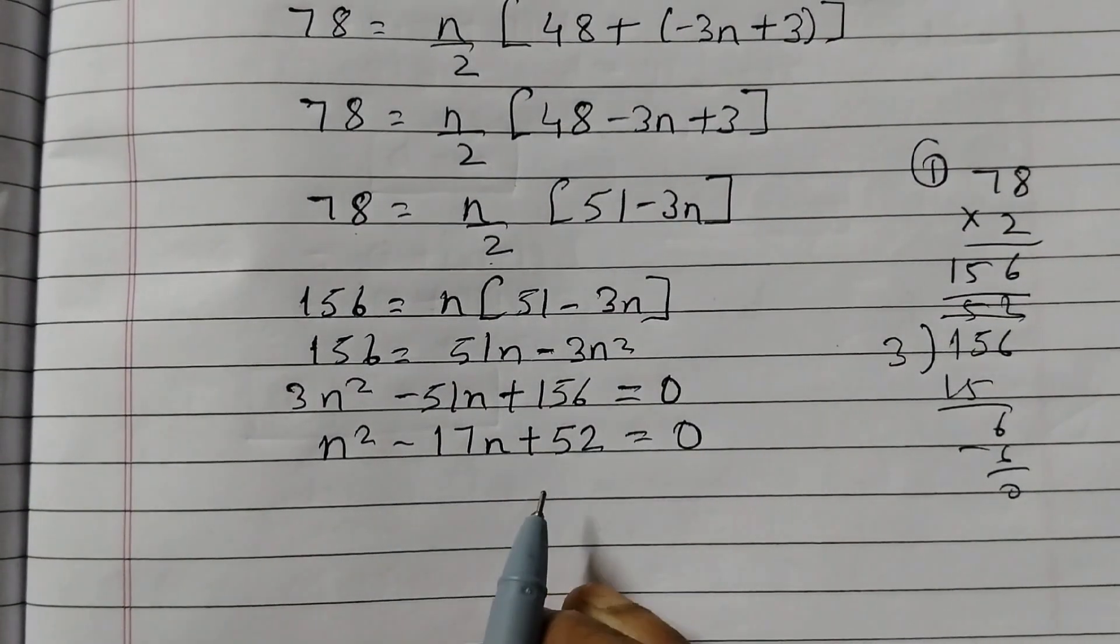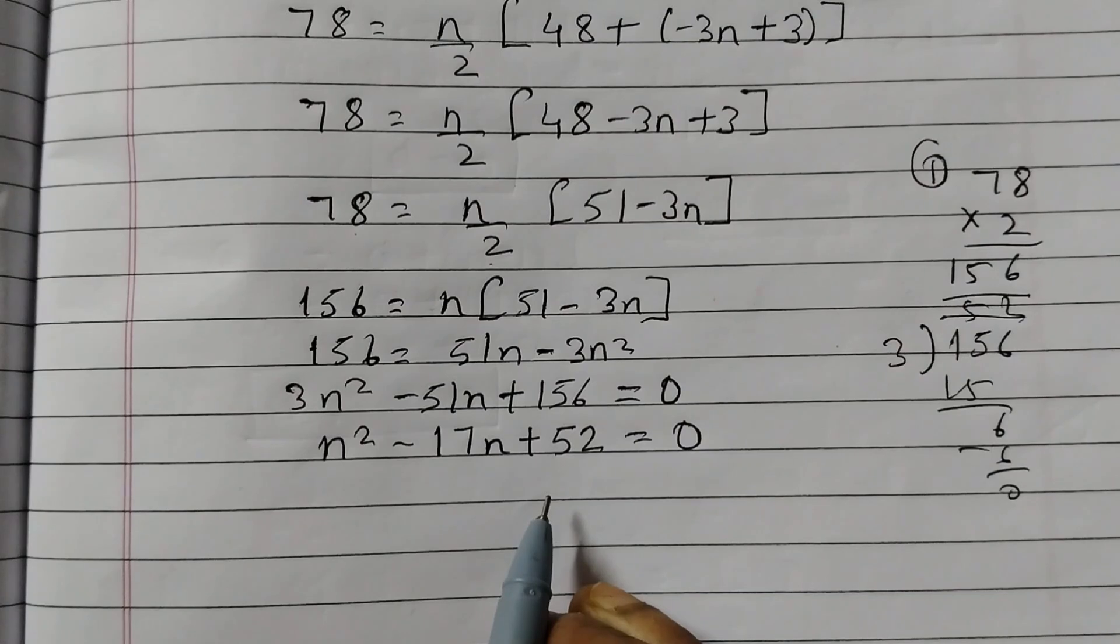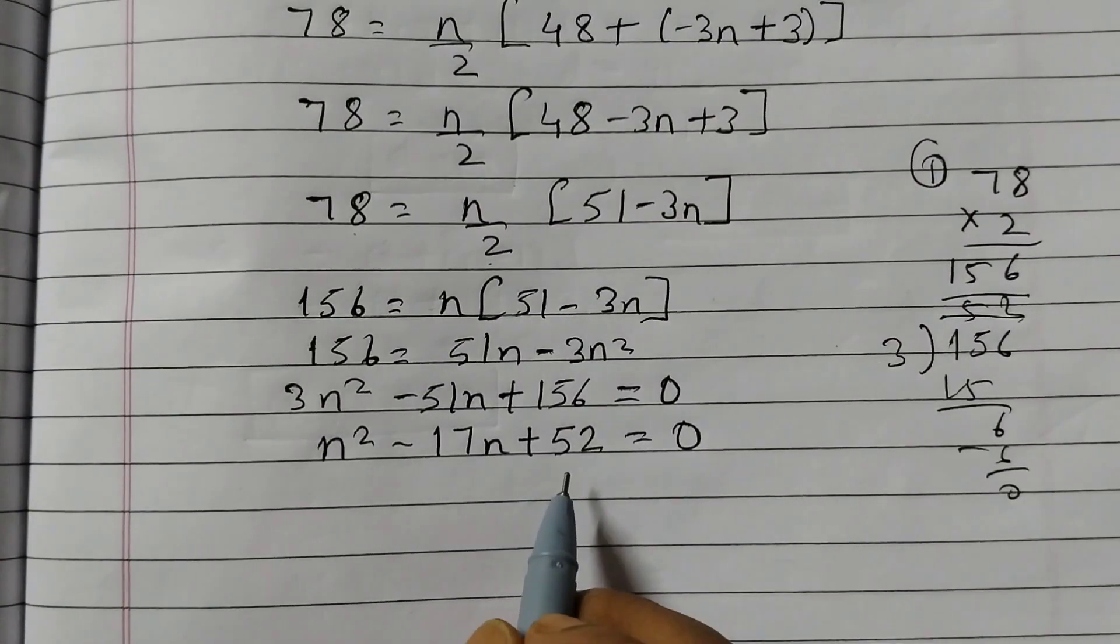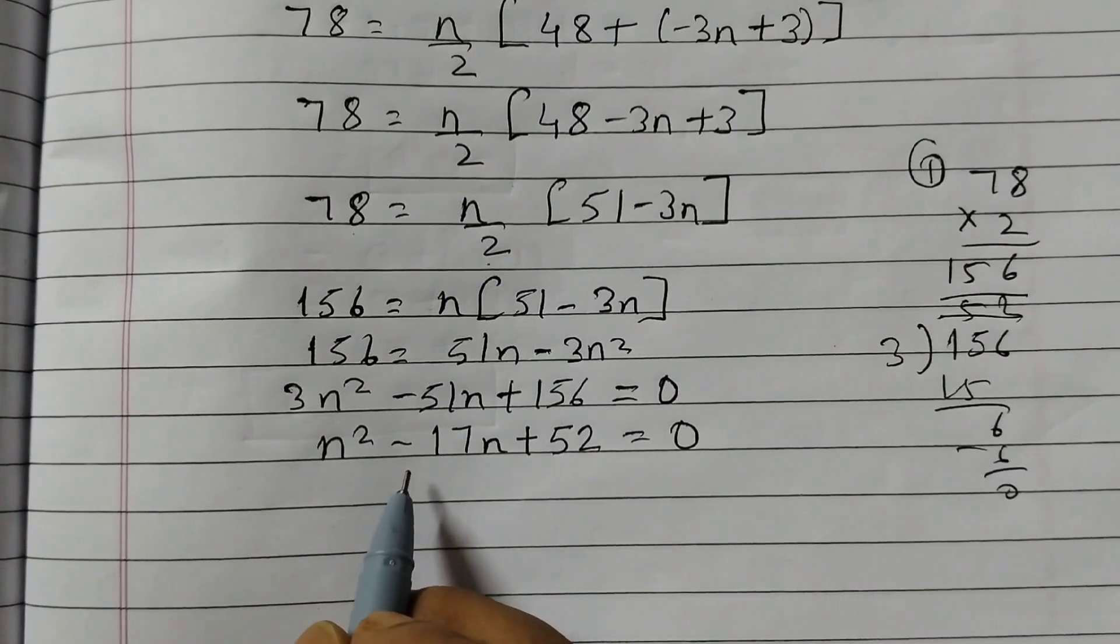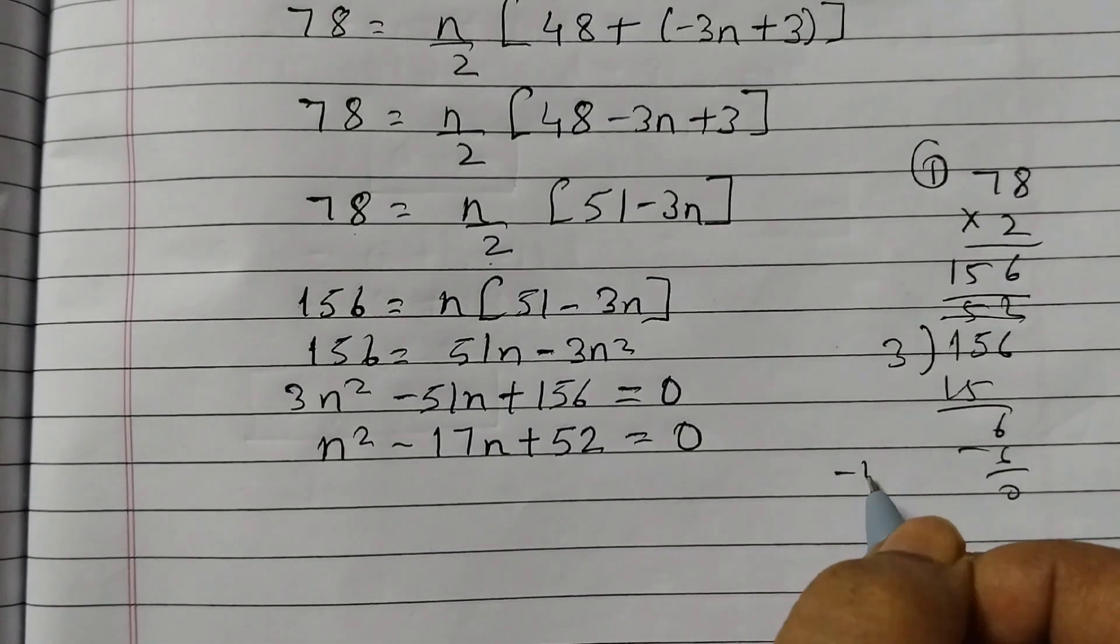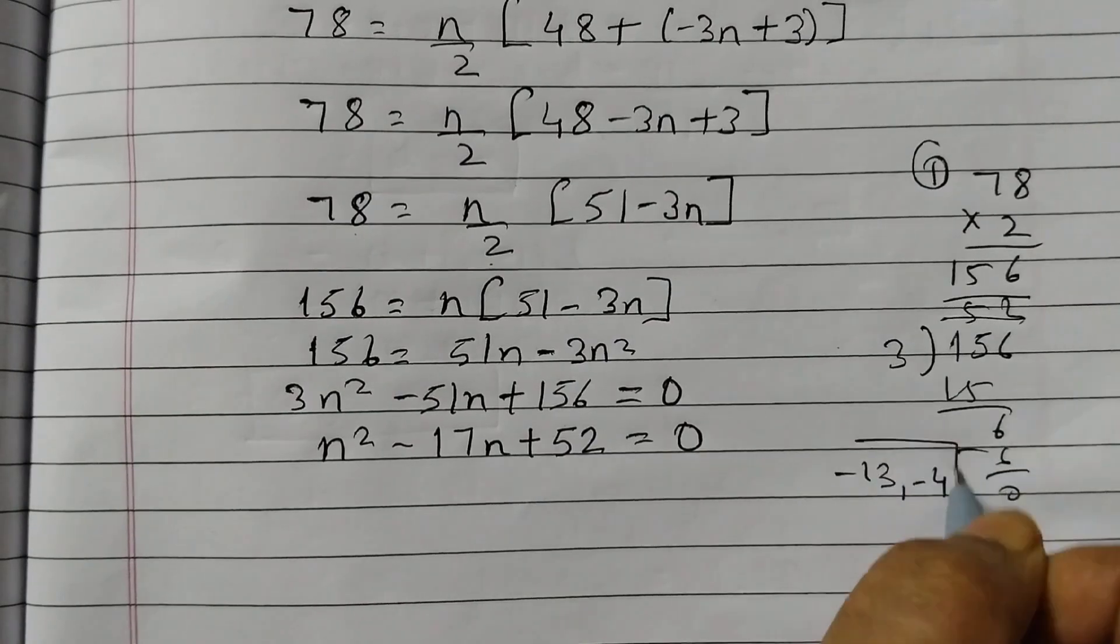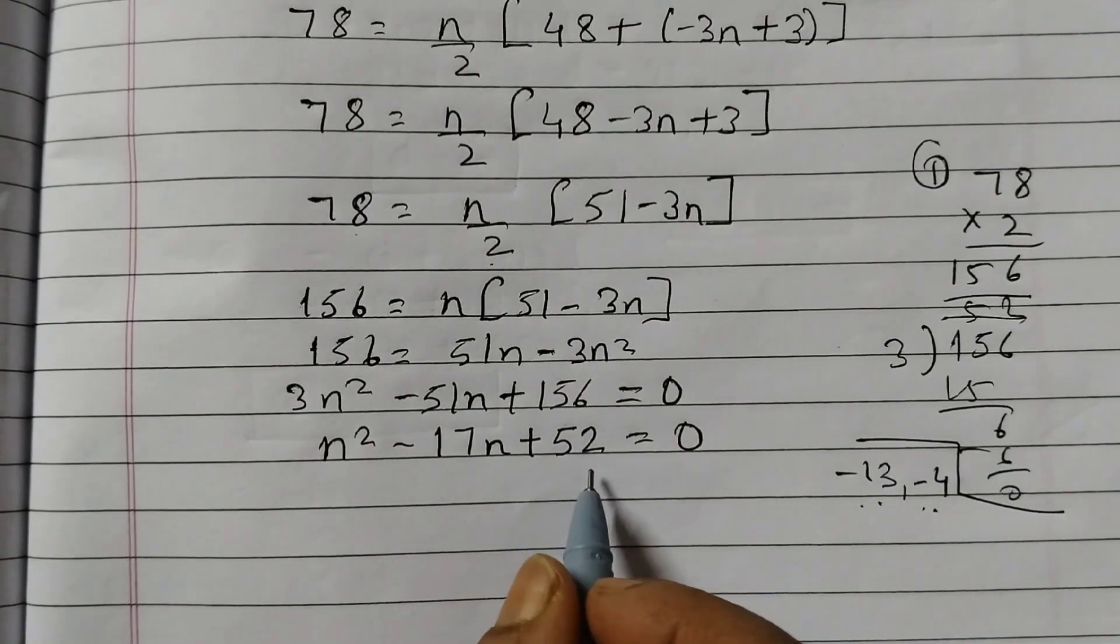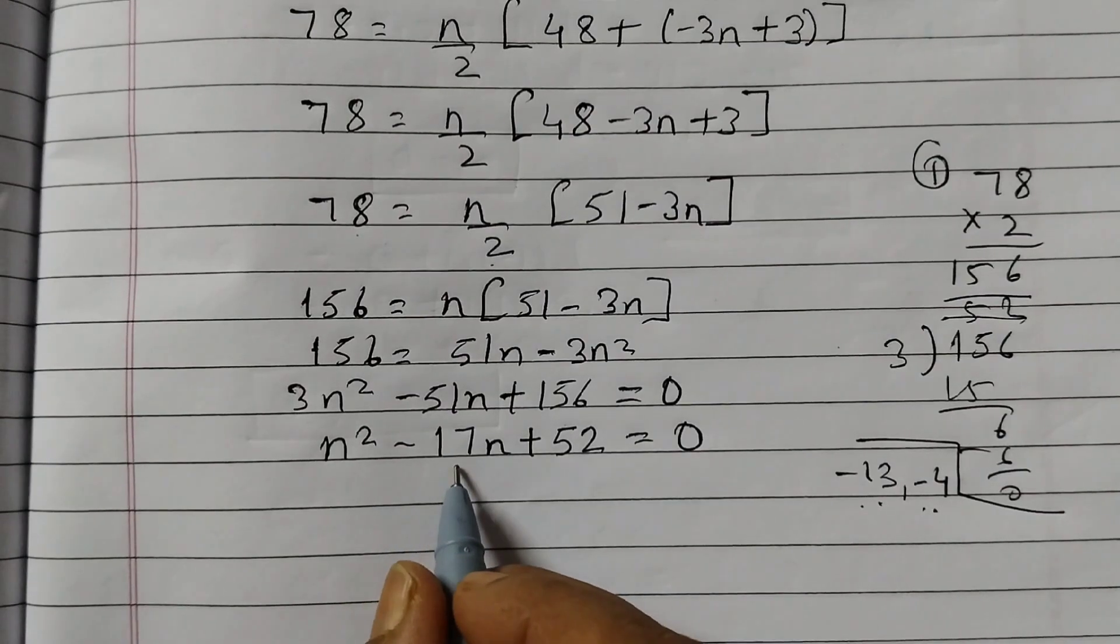So you know how to factor it out, right? We need two numbers which when added gives minus 17 and when multiplied gives 52. So the two numbers would be 13 and 4, 13 into 4 is 52. But then here we have a minus sign. So we will take minus 13 and minus 4 because minus 13 into minus 4 is 52 and the sum is minus 17.